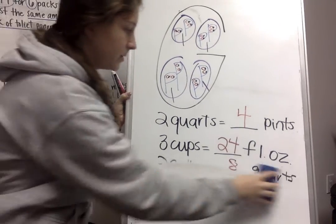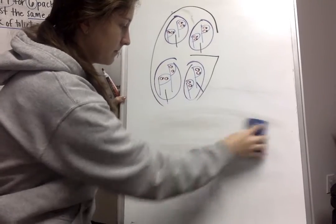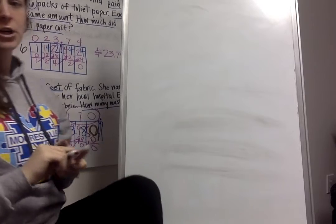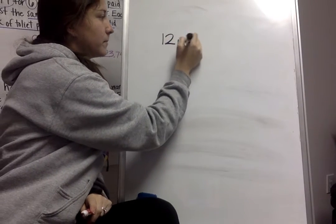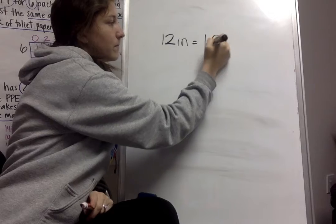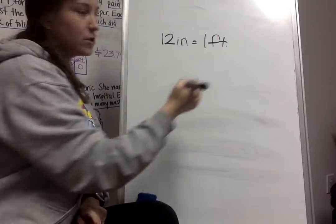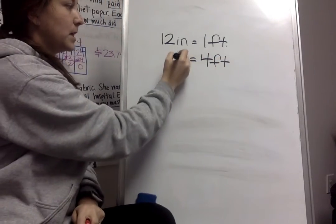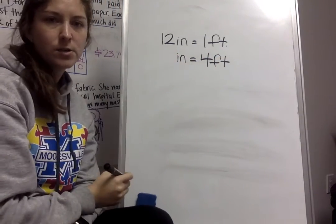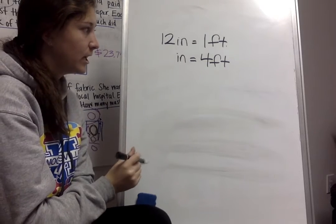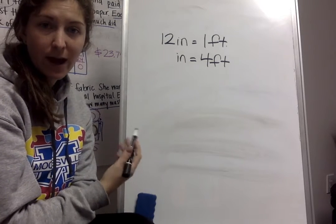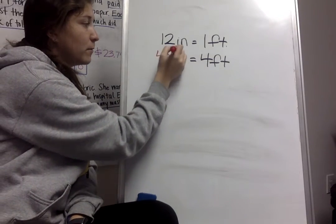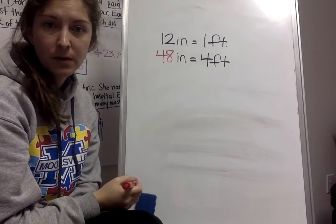So let's look a little bit at length. I know that there are 12 inches in one foot. So how many inches would there be in four feet? How many inches would I have? So if I know there are 12 inches in one foot, I need inches to feet. So I would have to multiply 12 times four, which I know would be 48. So then there's going to be 48 inches in four feet.